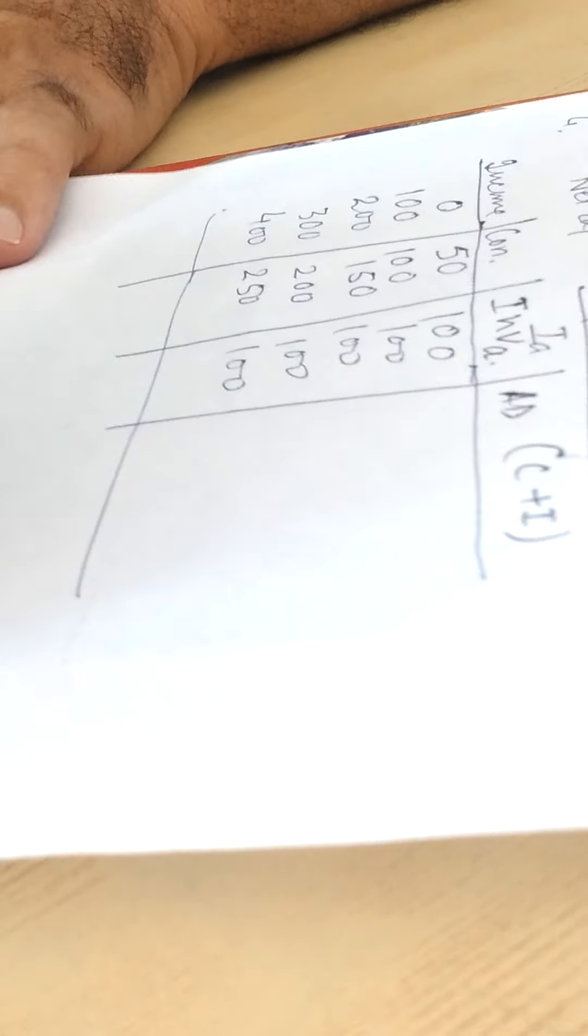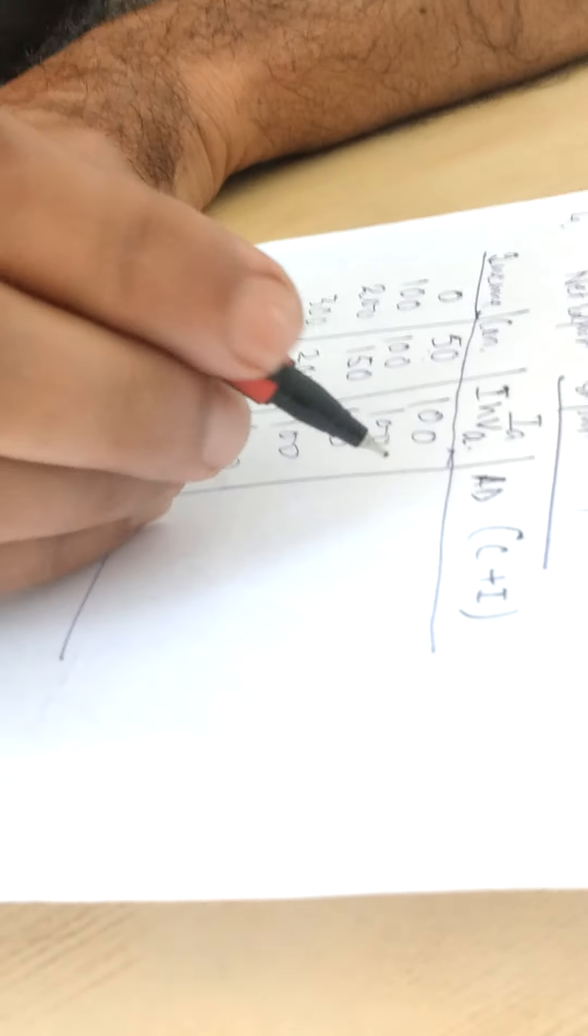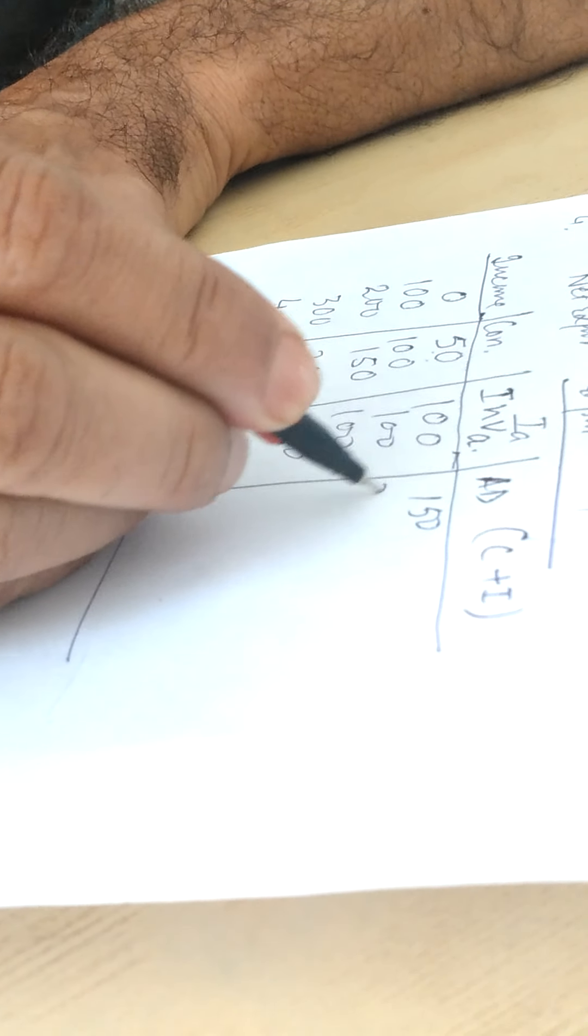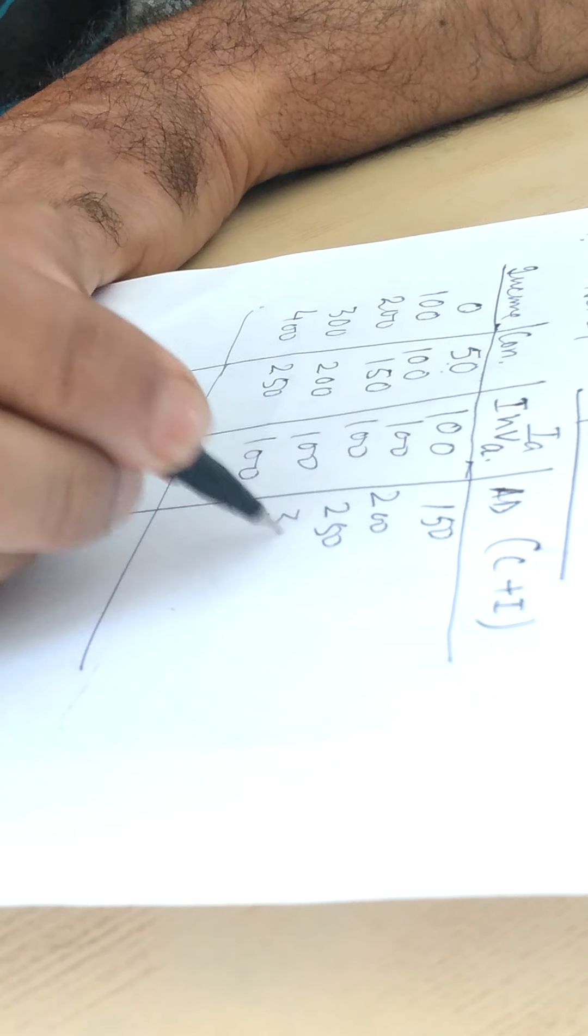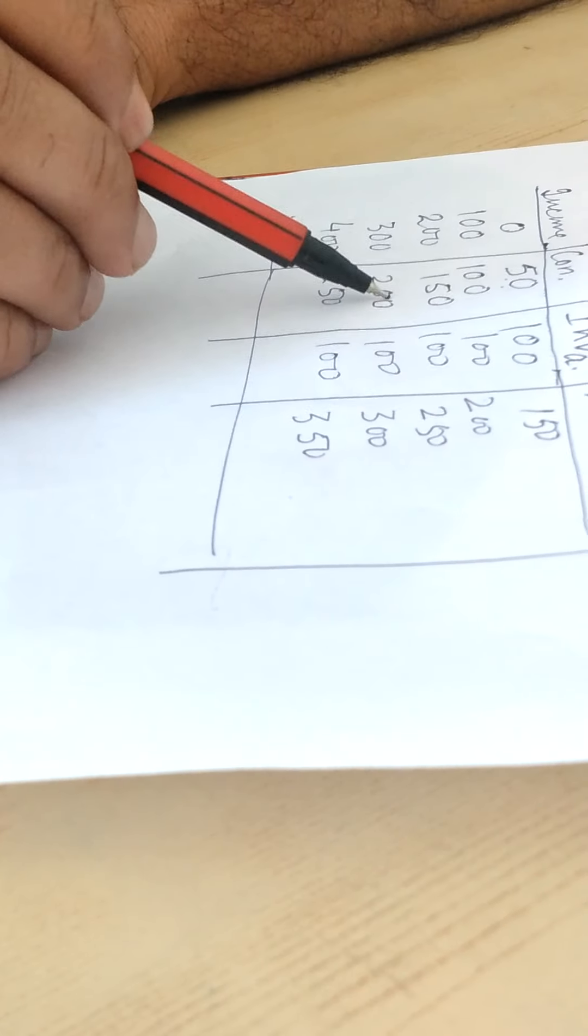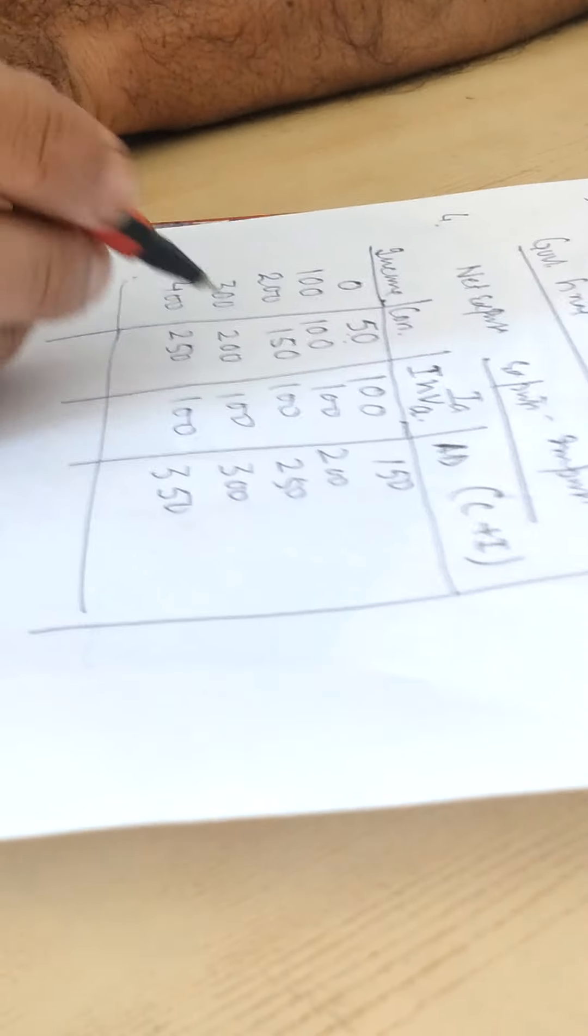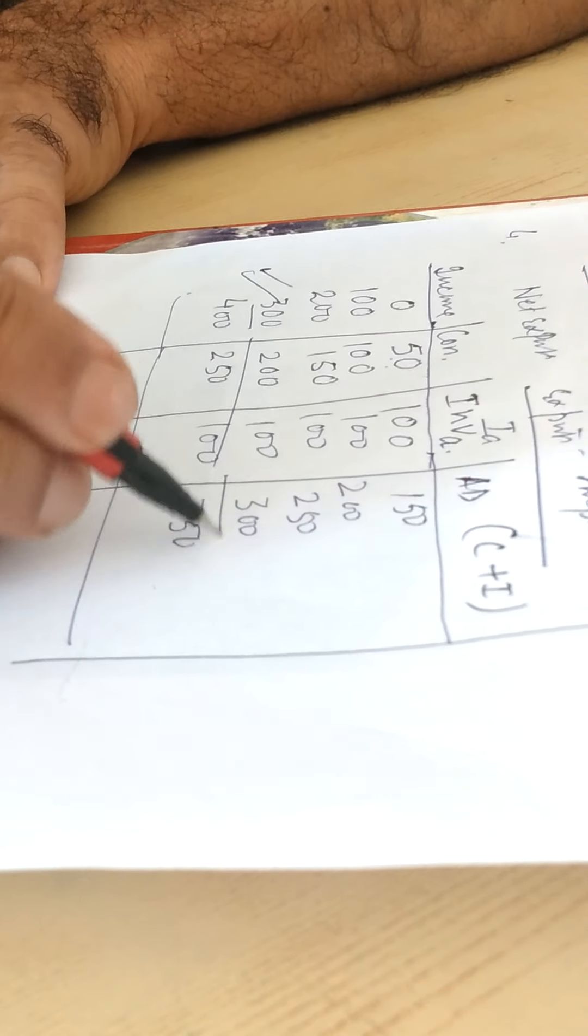In order to find out the aggregate demand, let's add C plus I means 50 plus 100 is equal to 150, then 200, 250, 300, and then 350. So in an economy you will find that aggregate demand is a sum of consumption demand and investment demand, and 300 is the level of that income where aggregate demand and income equals to each other.